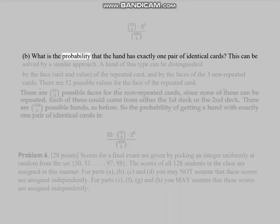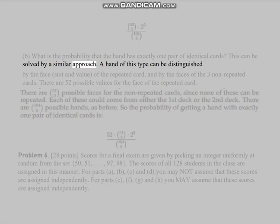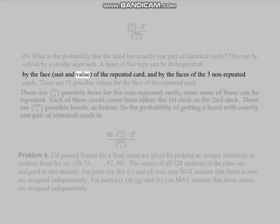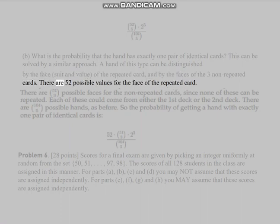Part (b): What is the probability that the hand has exactly one pair of identical cards? This can be solved by a similar approach. A hand of this type can be distinguished by the face, suit and value of the repeated card, and by the faces of the three non-repeated cards. There are 52 possible values for the face of the repeated card.